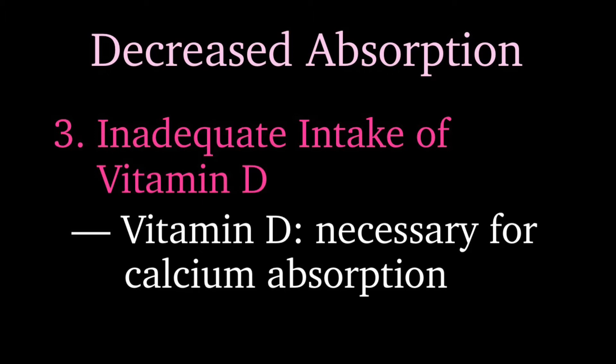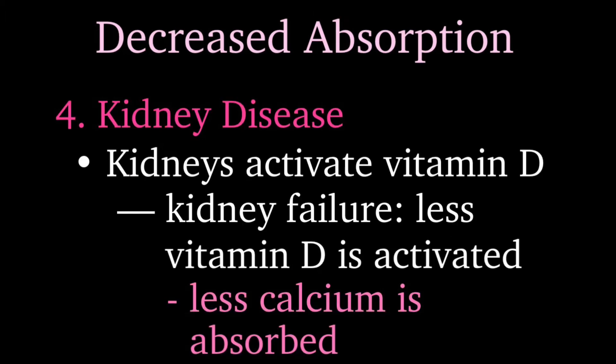An inadequate intake of vitamin D can also cause decreased calcium absorption, since vitamin D is necessary for calcium absorption from the intestines. Chronic kidney disease also falls under decreased calcium absorption. Vitamin D taken into the body — through the sun, diet, or supplements — is in an inactive form, and the kidneys convert it to an active form. In kidney disease, the kidneys cannot make vitamin D active, so we cannot absorb calcium, leading to hypocalcemia.